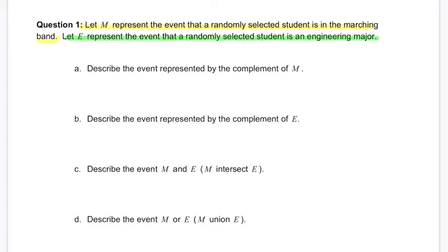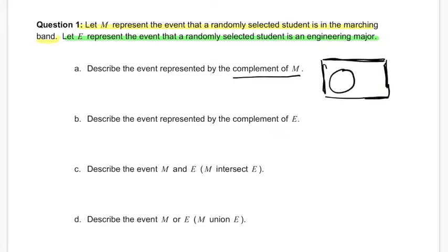Describe the event represented by the complement of M. The complement of M is essentially 'not M' — it's everything else. Using a Venn diagram, everything that can happen is represented by the rectangle. M is our sample space for the event that a student is in marching band. The complement is everything that is not M. You might see it written as M prime, M complement, or not M.